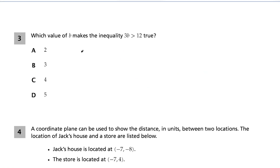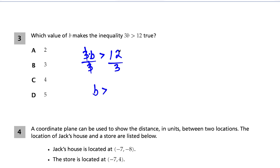Question 3: which value of B makes the inequality 3b > 12 true? We can solve this in one step. We have 3 times B is greater than 12. To get rid of times 3, we do the opposite — dividing by 3 on both sides. 3 divided by 3 cancels, and we have B is greater than 12 divided by 3, which is 4. So which answer choice gives a number greater than 4? That's the last answer choice.